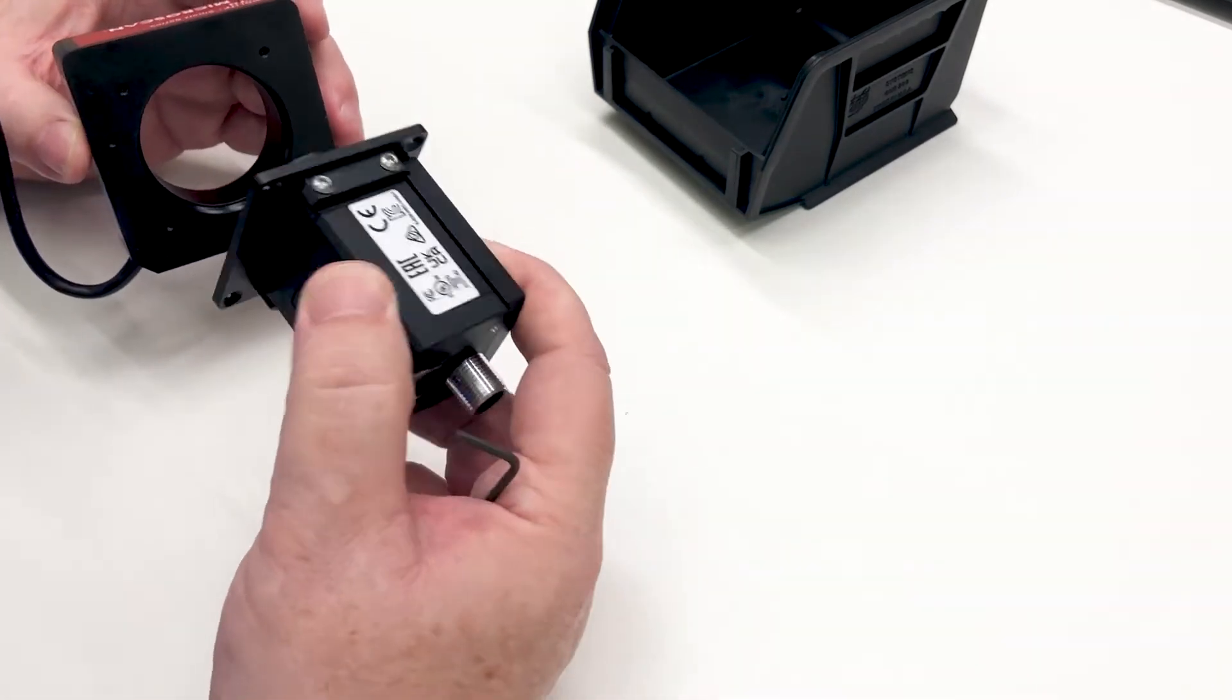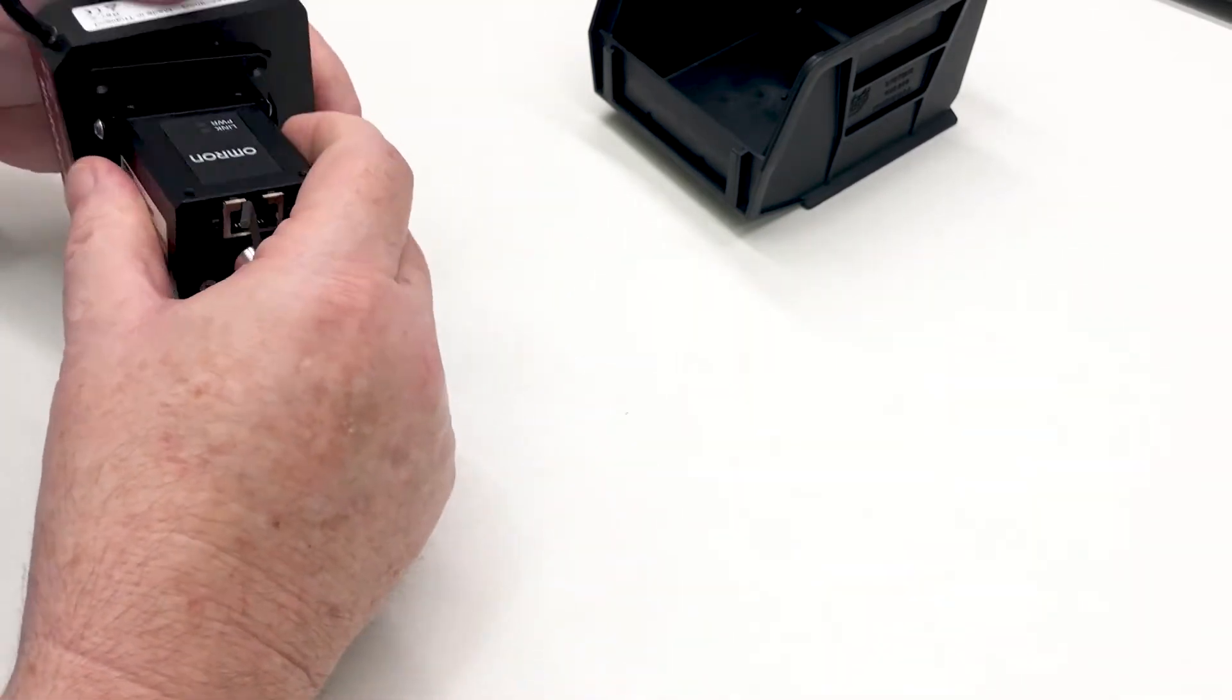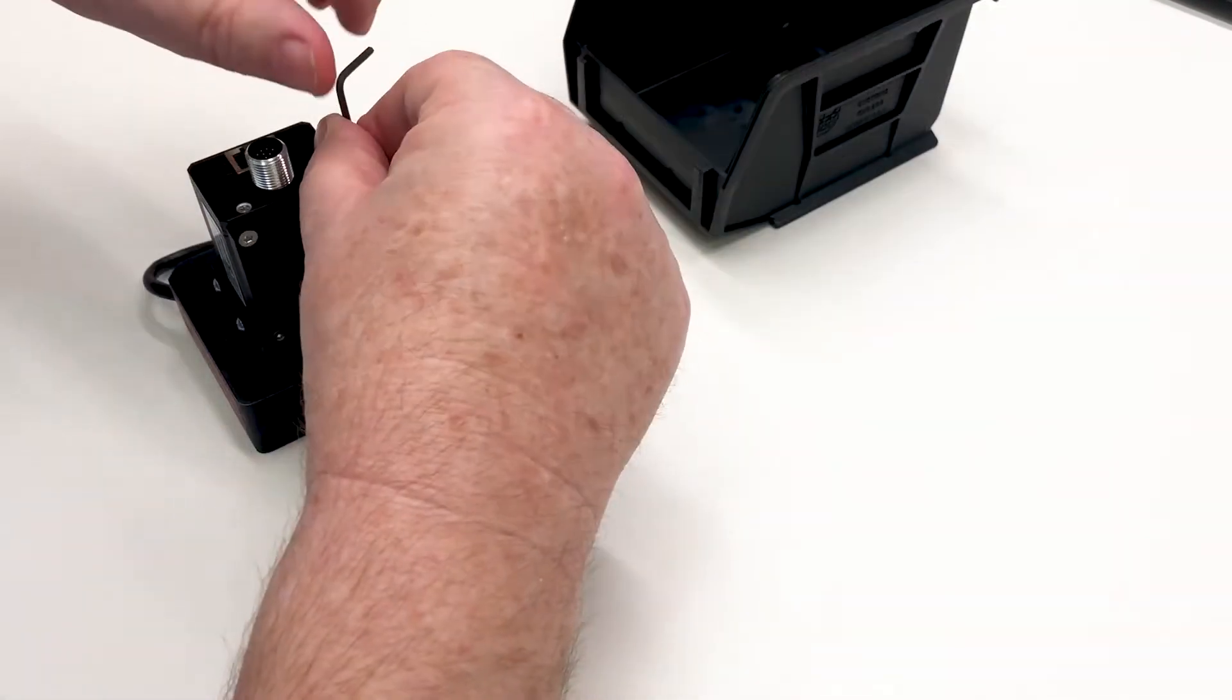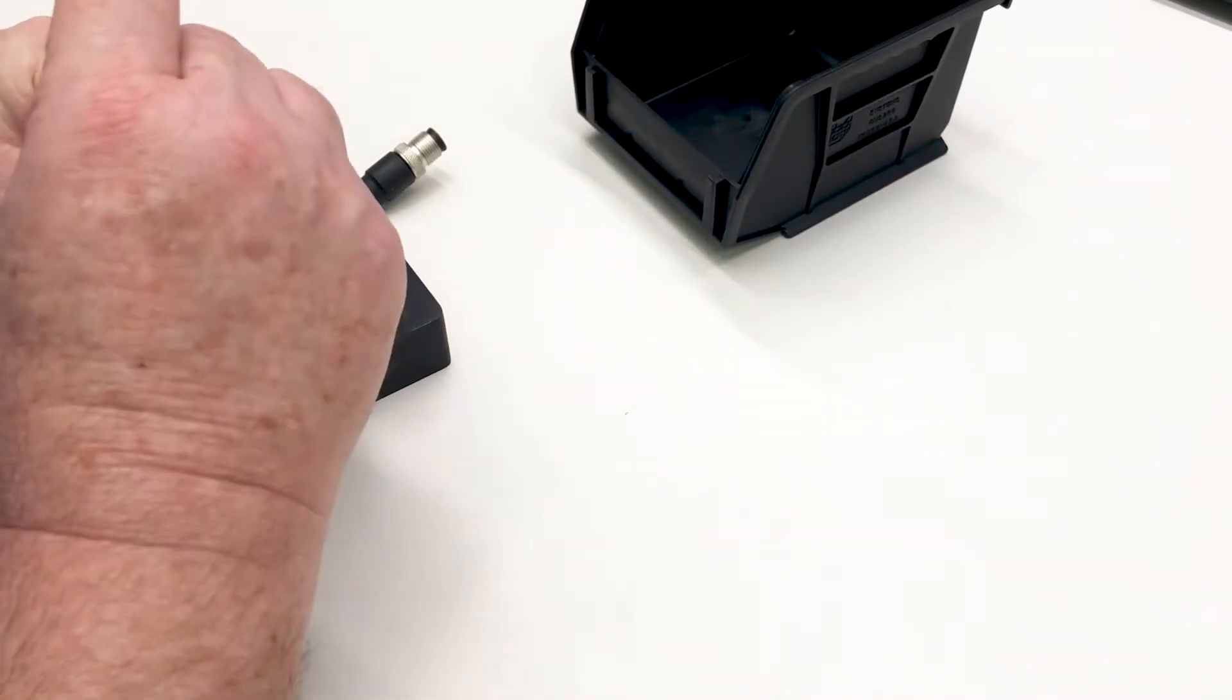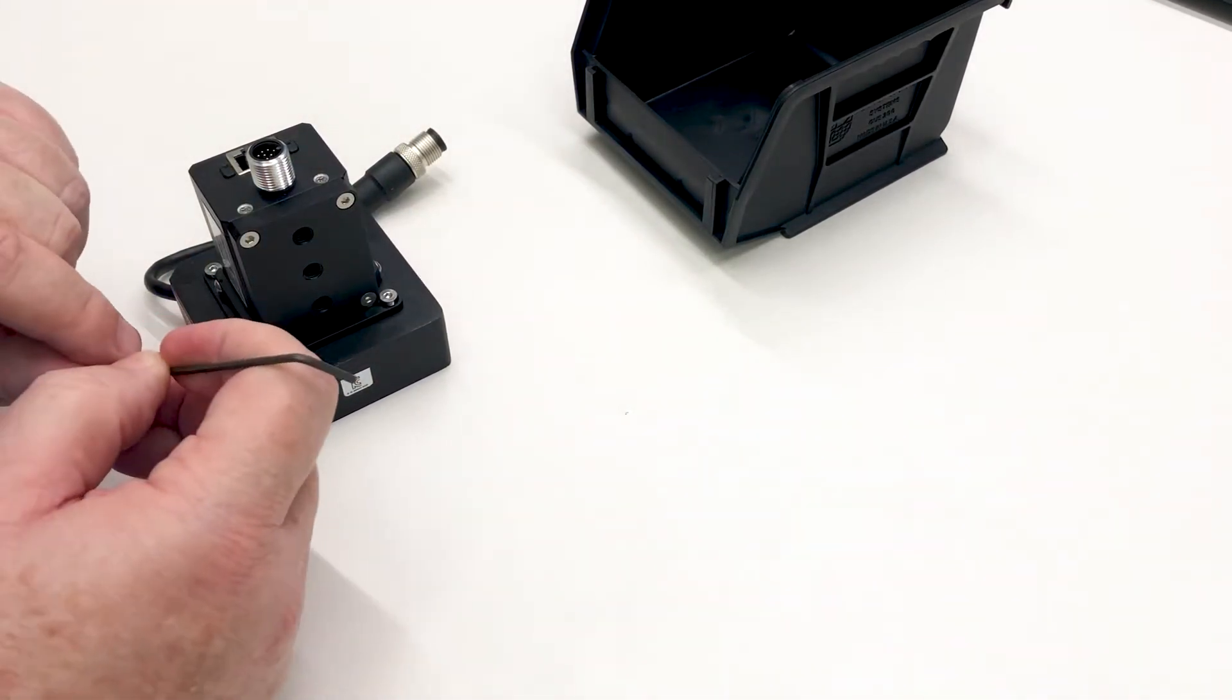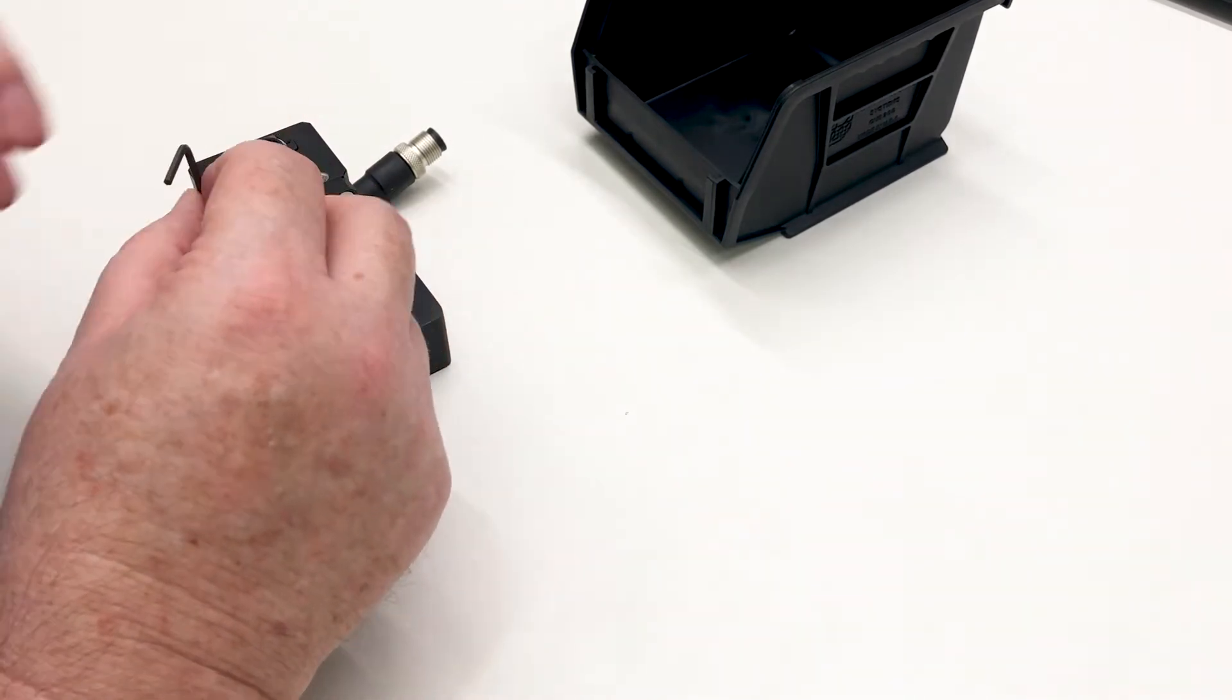Attach the NURLite using the supplied flathead screws, again using the 2mm hex wrench. Refer to your datasheet for guidance on light selection. The light selection will be based on what lens size you're using.